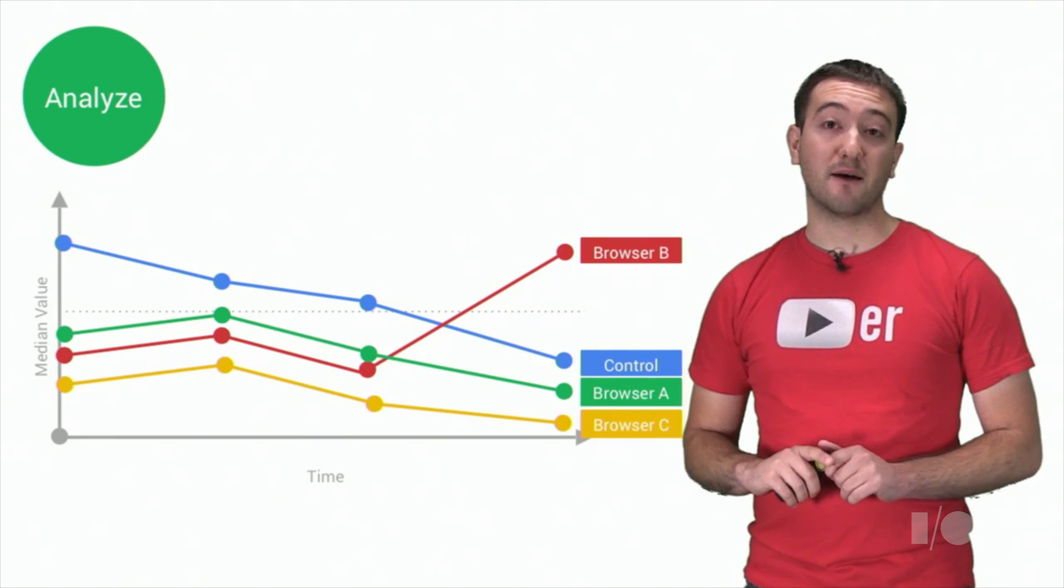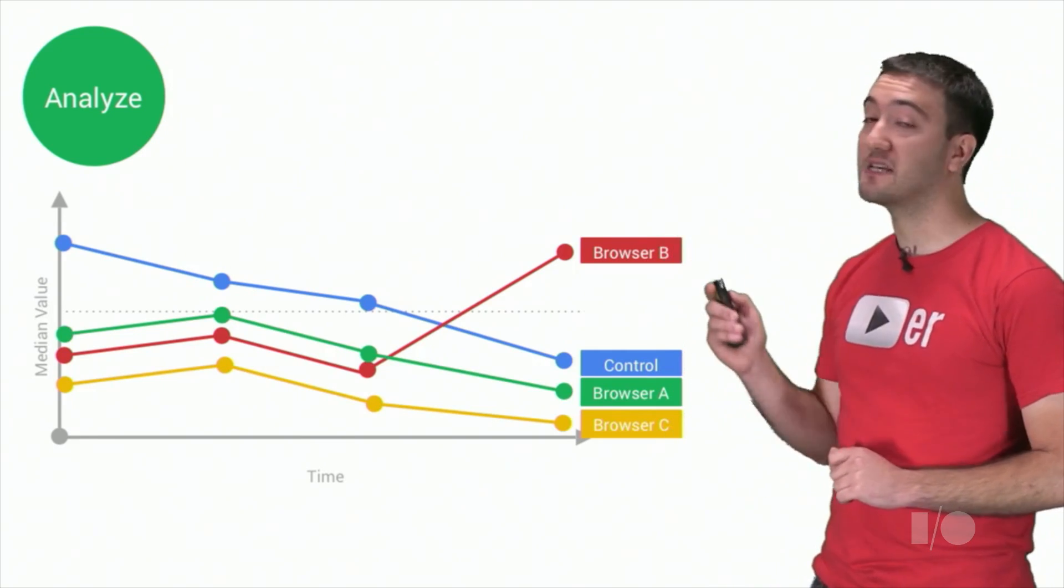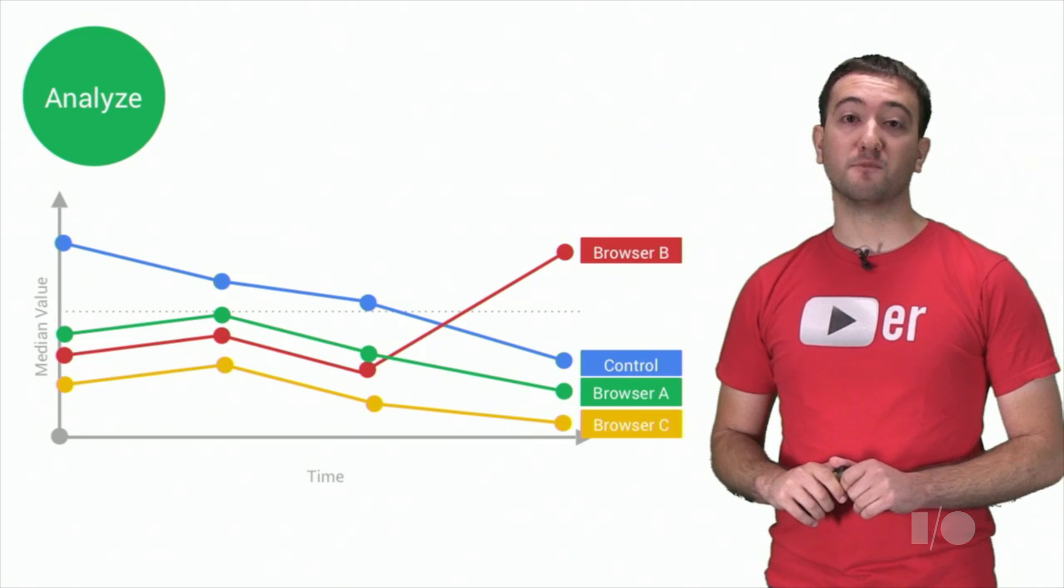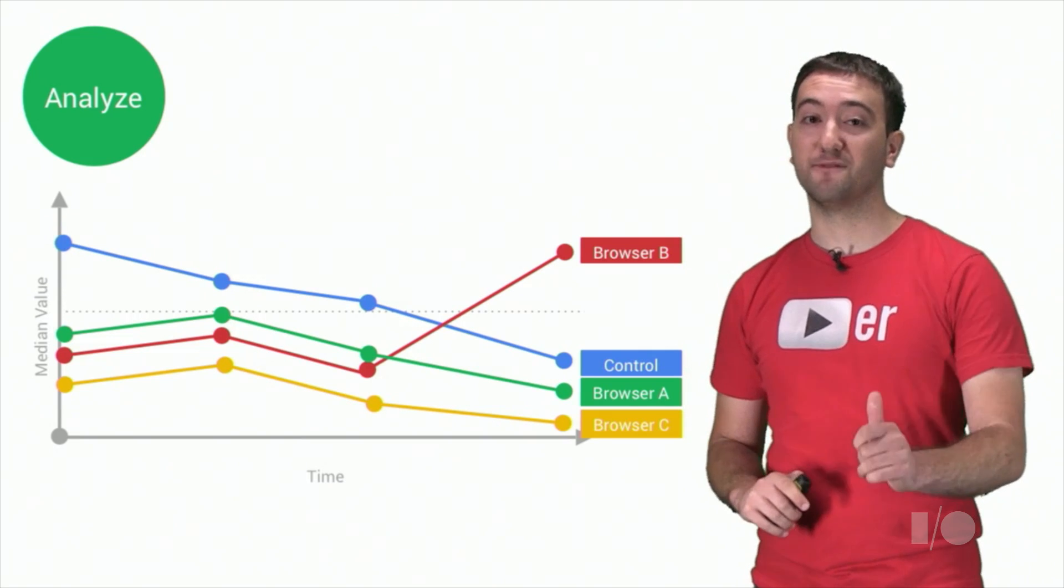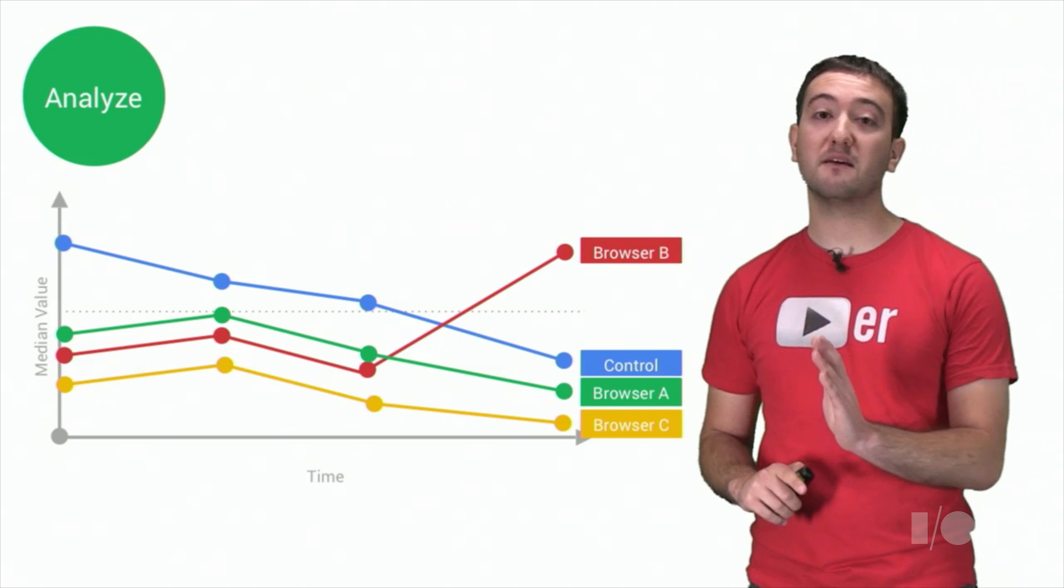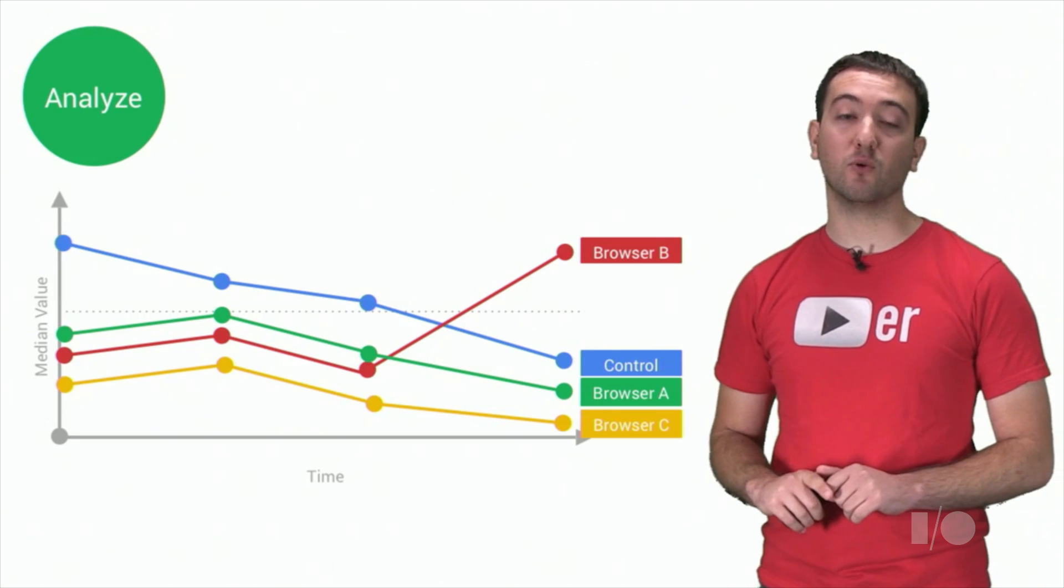We can use the CSI dashboard to slice data by various demographics to understand why this is happening. And when we break the data down by browser, it becomes clear that browser B is responsible for the regression. It's also worth mentioning that because we gather data from so many users, all of whom have different devices on different networks, we typically look at the 50th percentile or the median value to give us a representative view of performance data.